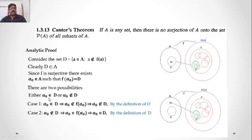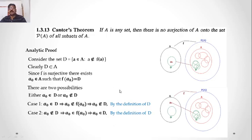Case 2: Suppose A₀ is not in D. Since D consists of every element a in A for which a is not in F(a), and A₀ is not in D, therefore A₀ is in F(A₀). But F(A₀) = D, so A₀ is in D. So assuming A₀ is not in D gives A₀ is in D. That is also a contradiction. In either case we get a contradiction. Hence what we assumed is wrong — it is not possible to define a surjection from A onto P(A). That completes the proof. Thank you.